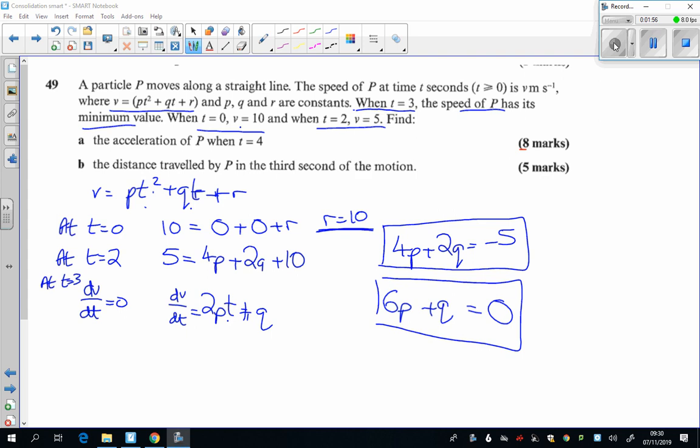Now there's two simultaneous equations there. I don't think you need me to go through how to solve those. Maybe just times that one by 2 and take them away. Or even just solve them on the calculator. And you get two answers. P is 5 eighths and Q is minus 15 over 4.